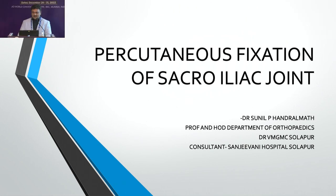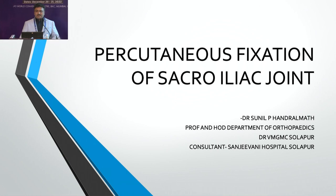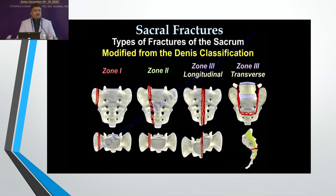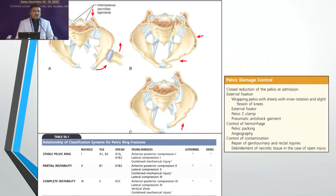I call upon Dr. Sunil Handralmath for his presentation on percutaneous iliosacral screw fixation. Good afternoon. We are talking on percutaneous fixation of the sacroiliac joint. I am working at Government Medical College Solapur. Young and Burgess classification, Tile's classification — everybody is well versed. These are the sacral fractures which allow for zone classification and central body fractures, where longitudinal fractures are of interest. Tile's A, B, and C: stable pelvic ring, partial unstable, and completely unstable, where shearing fractures and rotational forces lead to vertical as well as rotational translation of the hemipelvis.